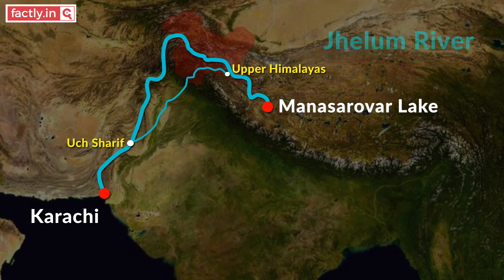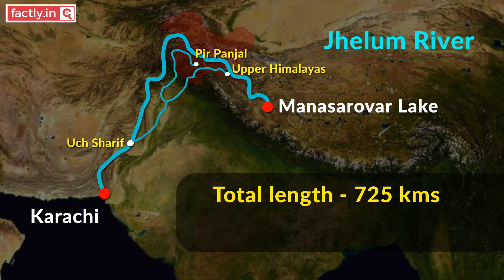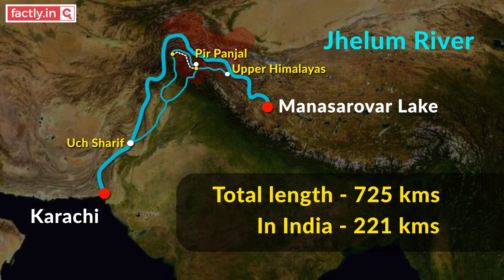Jhelam rises from Pir Panjal in the southeastern part of Kashmir, travels through the Kashmir valley, and joins Chenab in Pakistan's part of Punjab. It has a length of 725 km, with only 221 km in India.